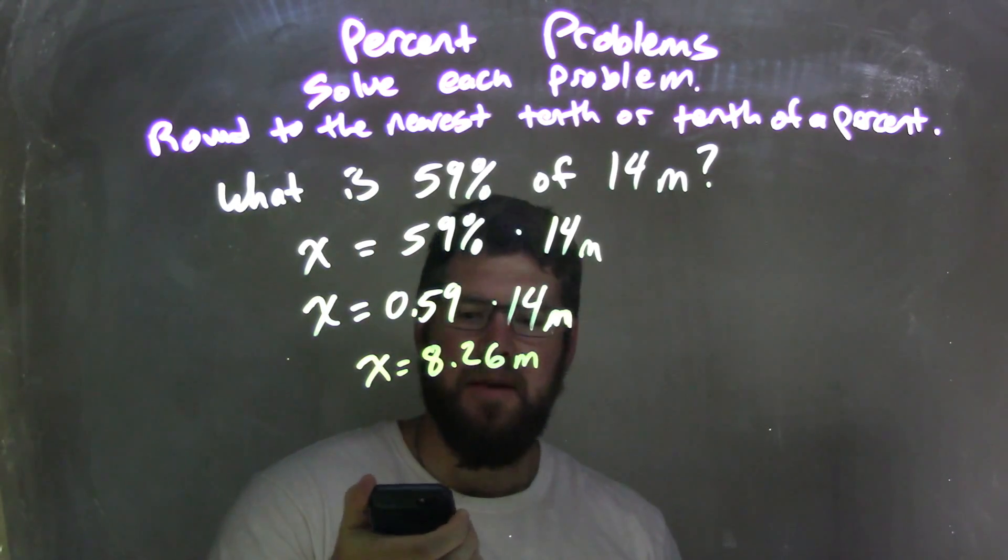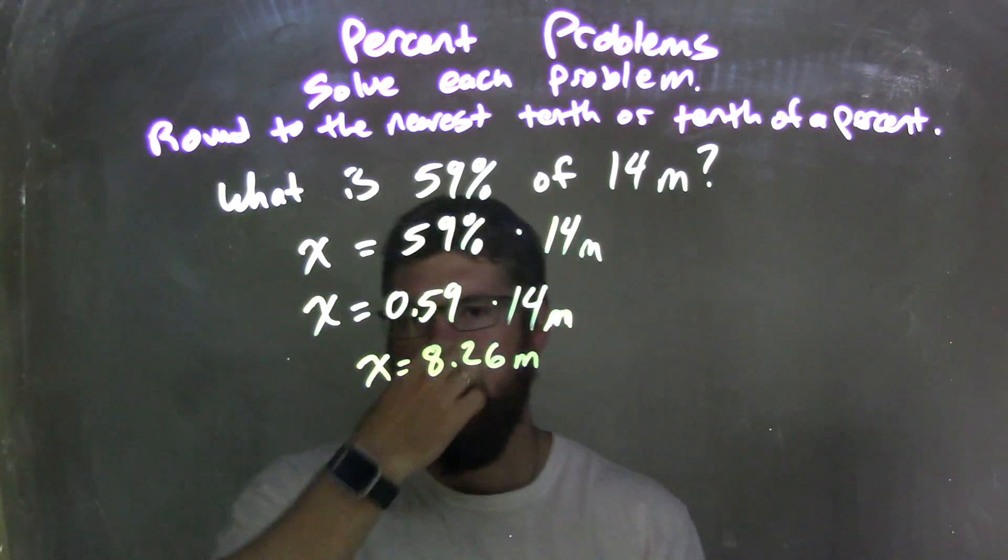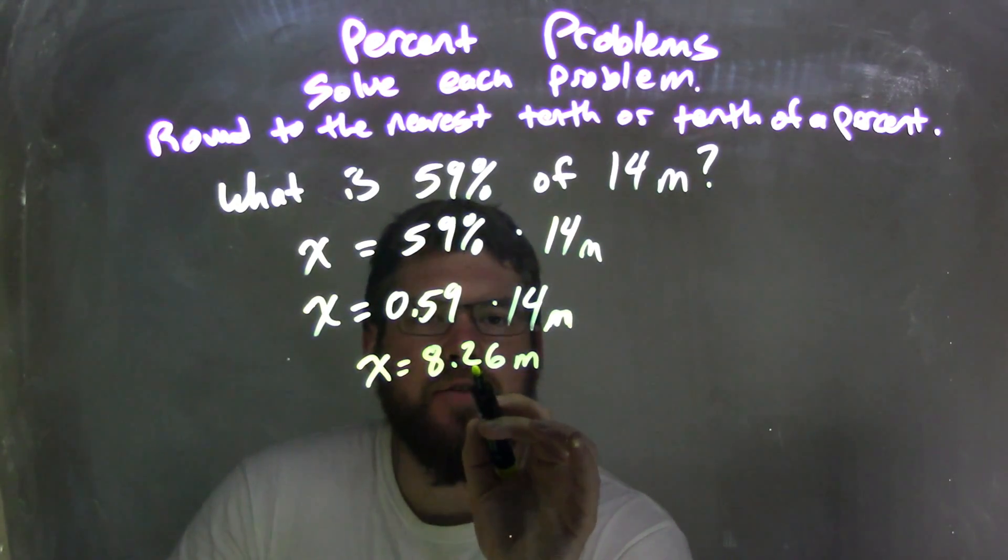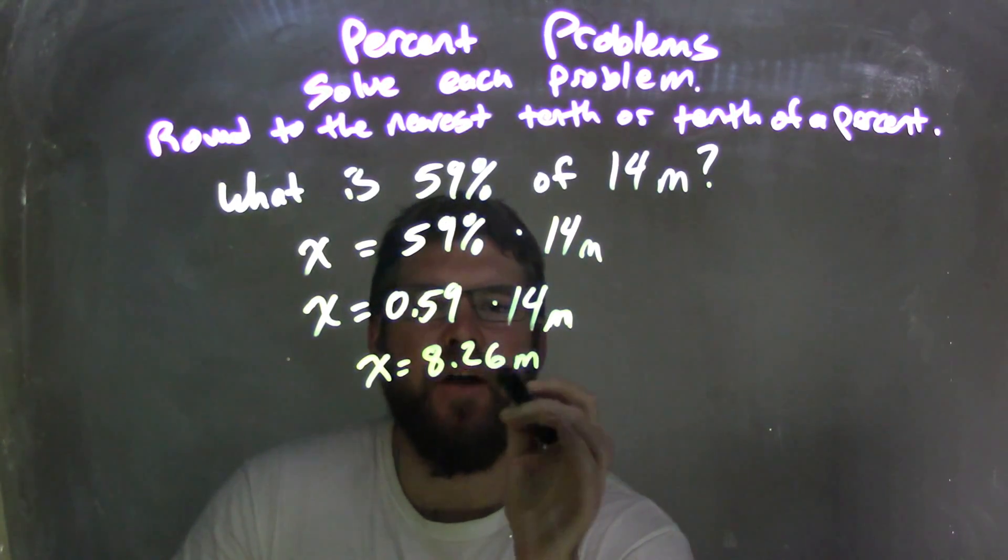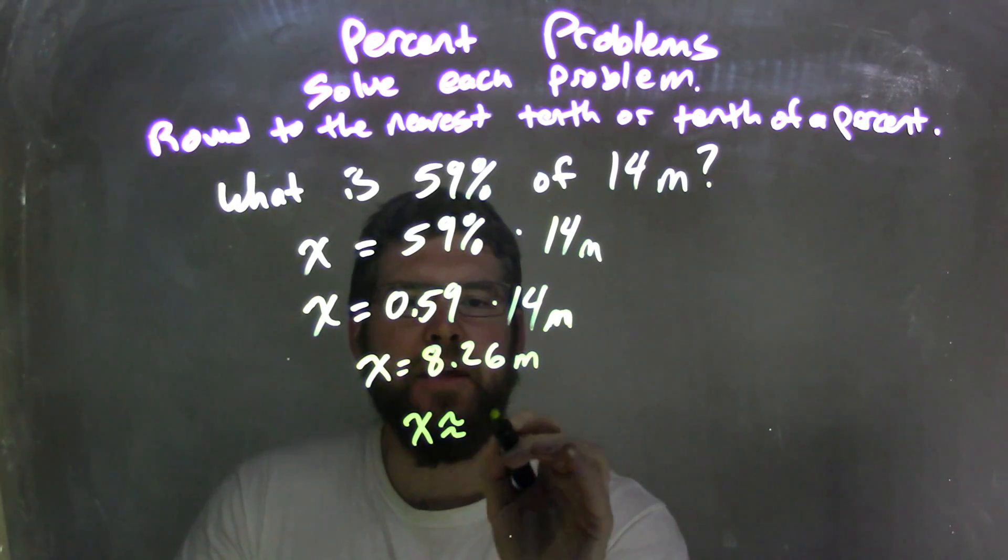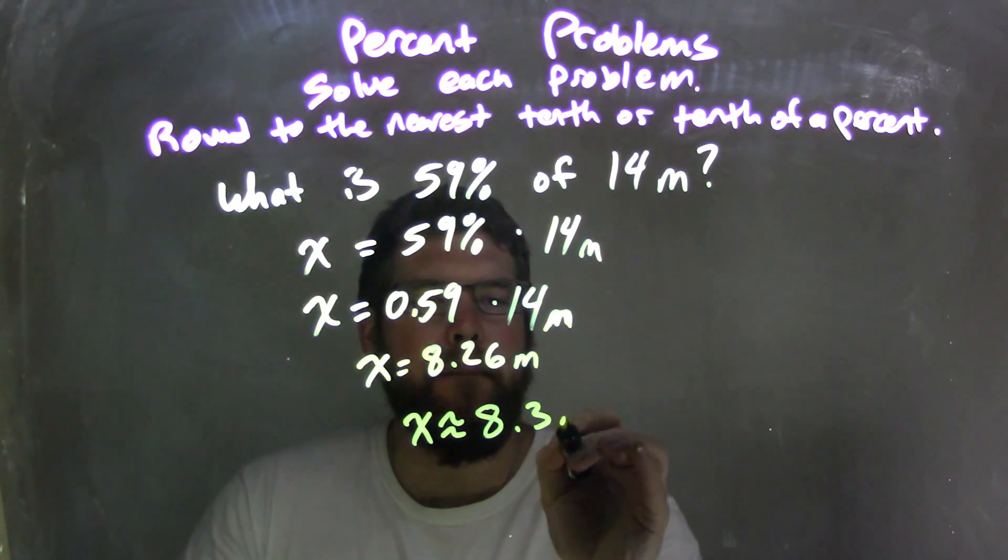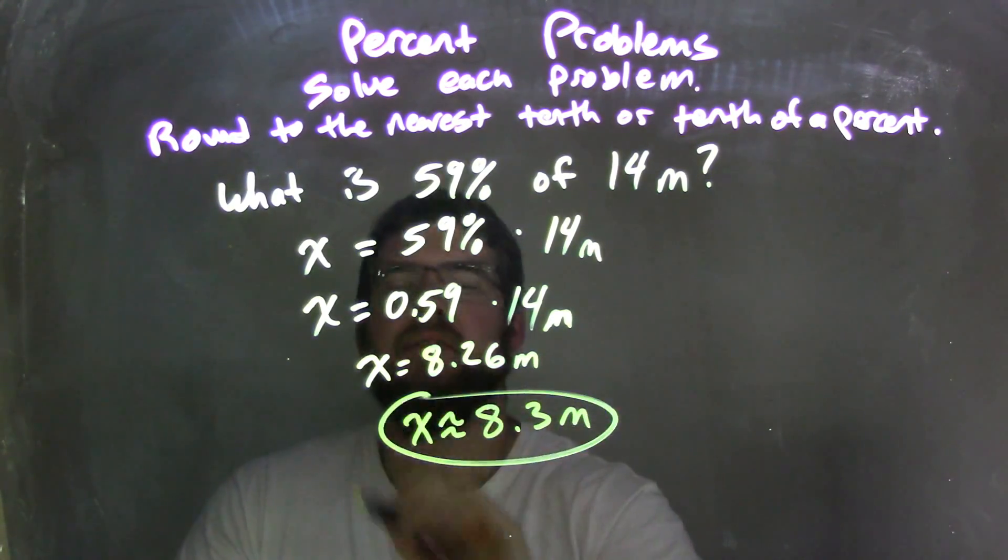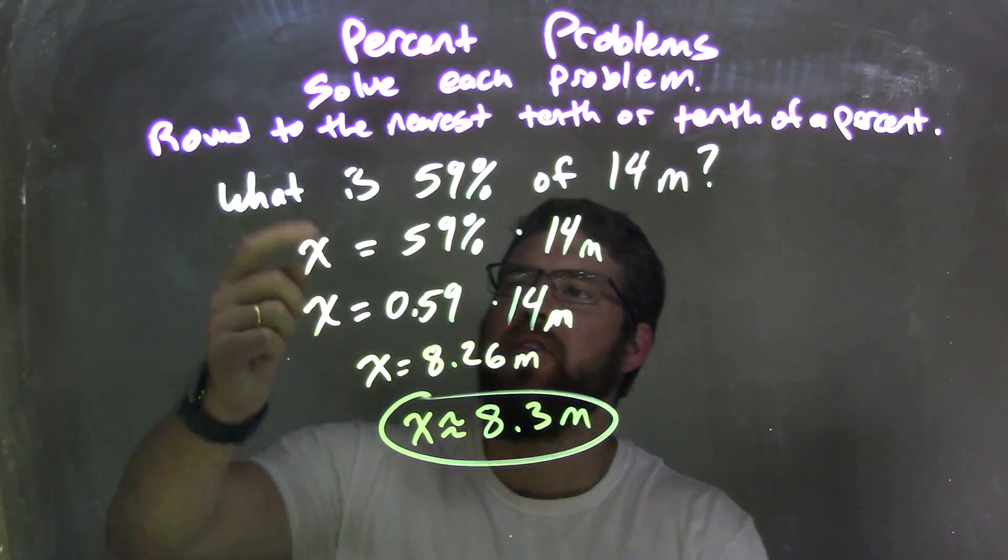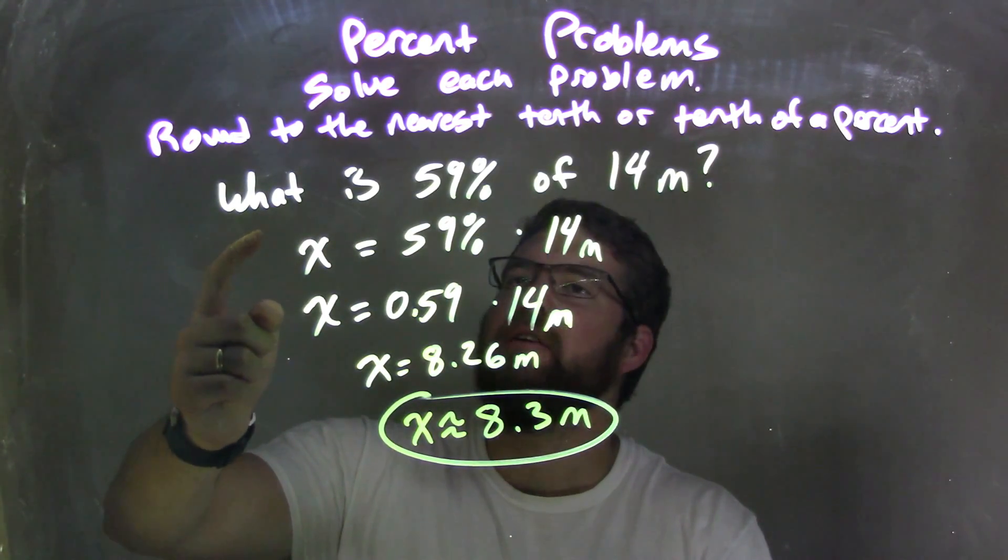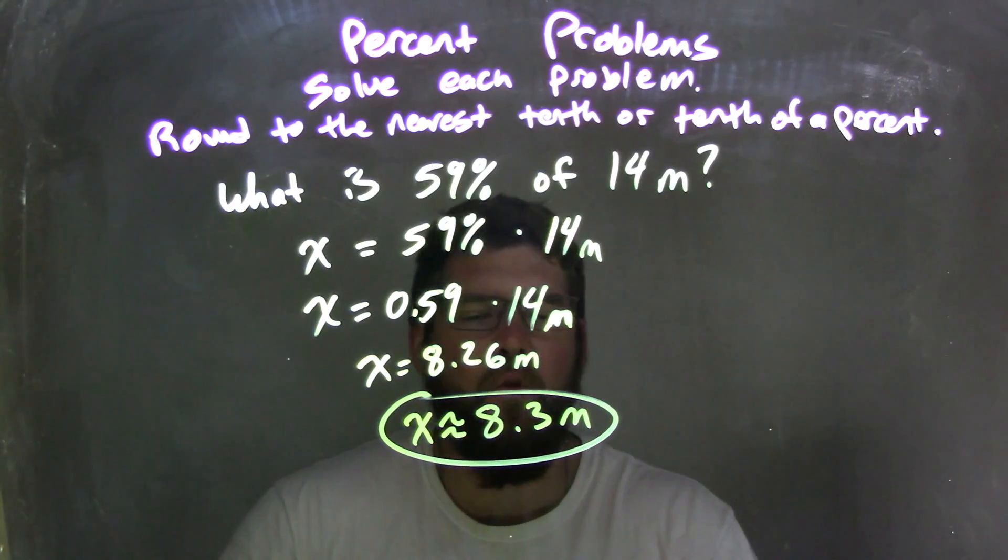Now we need to round that to the nearest tenth. Look at the 2 and the 6. The 6 causes the 2 to round up to a 3. So x is approximately 8.3 meters. That is our final answer. 8.3 meters is 59% of 14 meters.